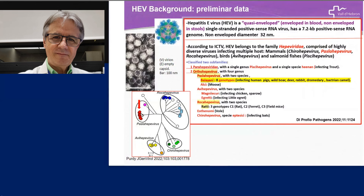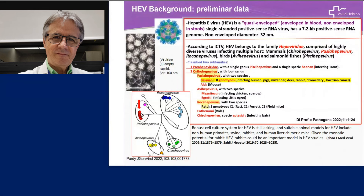Special attention may be paid to the genus Rocahepevirus, which includes rodent hepeviruses, like the species Rati — genotype C1 from rats — which has been recently related to human transmission. It's also a zoonotic problem. Currently, a robust cell culture system for hepatitis E virus is still lacking. Suitable animal models for hepatitis E virus include non-human primates, swine, rabbits, and humanized mice. Given the zoonotic potential for rabbits, rabbits could be an important model for hepatitis E virus studies.